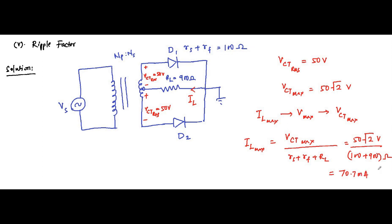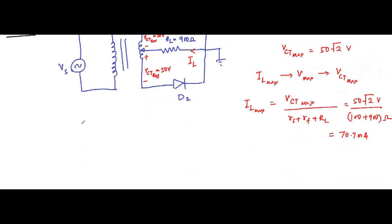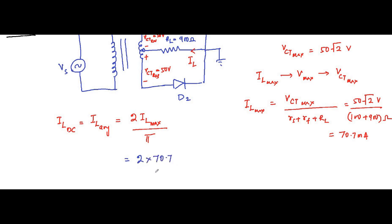From this maximum value of load current we determine the average (DC) value and the RMS value, since they are all interrelated. The DC value or average value I_L_DC equals 2·I_max divided by π. So it will be 2 times I_L_max (70.7 mA) divided by π, which comes out to approximately 45 milliampere.